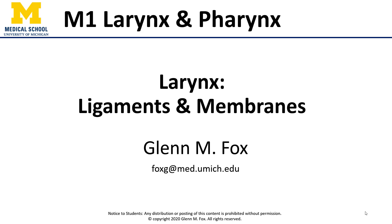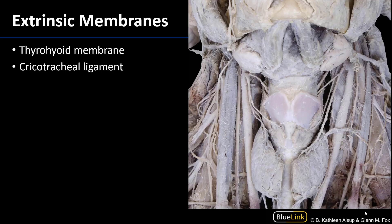Let's talk about the ligaments and membranes of the larynx. There are both extrinsic and intrinsic membranes and ligaments. Extrinsic membranes and ligaments are elements which connect the laryngoskeleton to something external to the larynx, whereas intrinsic are elements that are of the larynx.